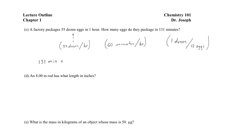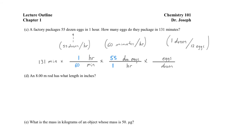In the first step, we convert 131 minutes into hours using the conversion factor: one hour equals 60 minutes. We do this first because the conversion factor that transforms time into dozen eggs uses hours rather than minutes. Once we've done that, we convert hours into dozen eggs. Finally, we convert from dozen eggs into individual eggs using the conversion factor expressing the relationship between a dozen and 12. The units cancel: minutes cancels, followed by hours, and then dozen eggs, leaving us with eggs.